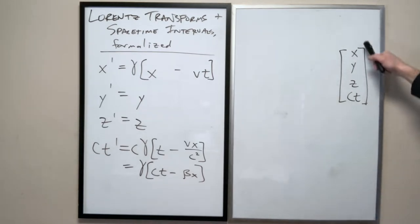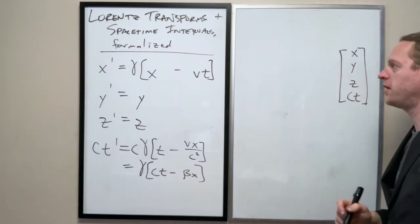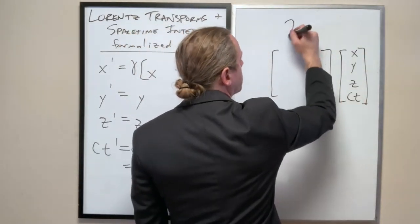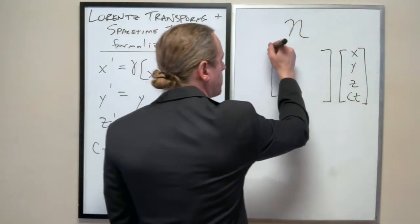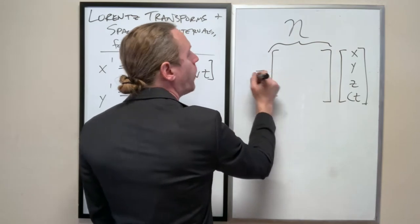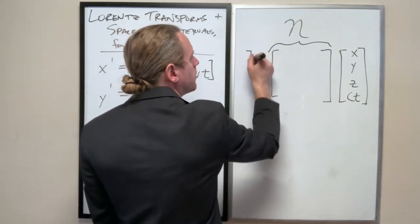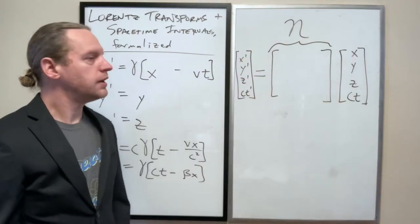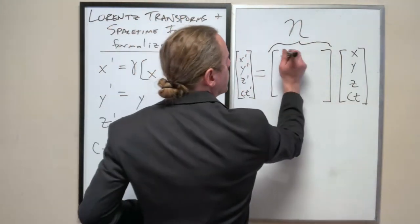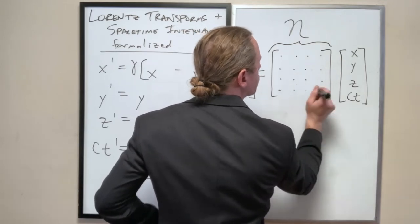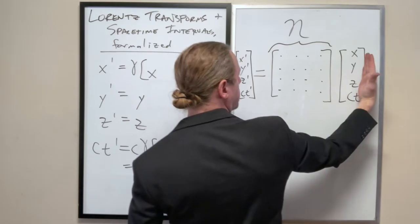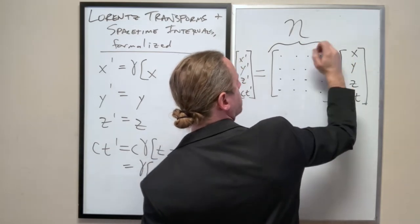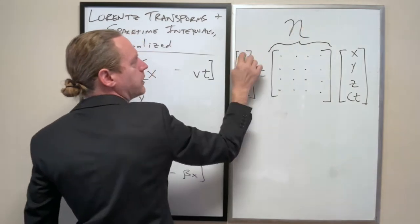And that's not even right, because in that case there, this needs to be C gamma times this. And by the way, if you notice here, we can distribute that C to be CT. We can distribute the C there, so it just becomes beta times X. So let's do that. Gamma times CT minus beta X. And so what I want to do now is let's make a matrix where we have our vector X, Y, Z, and CT.